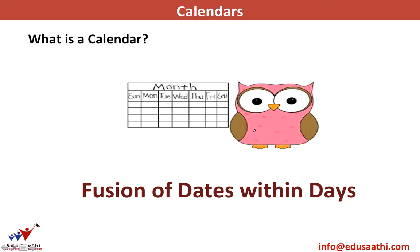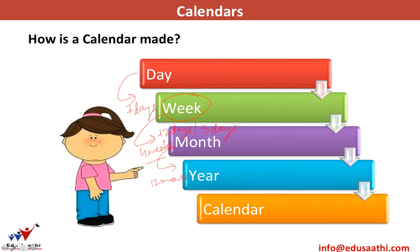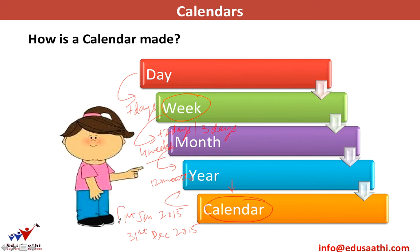The first thing we understand today is what is a calendar. It's a fusion of dates within days. Let's look at the structure: 7 days make a week, and 4 weeks plus 2 or 3 days make a month — generally excluding February. Then 12 months make a year, giving us a calendar year, for example 1st January 2015 to 31st December 2015. This is different from a financial year, which begins in April and ends in March.